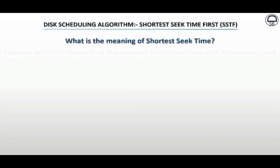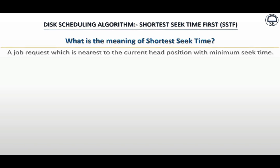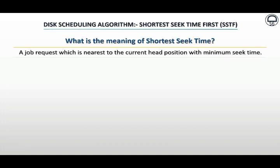Now let us discuss about the meaning of shortest seek time. It means a job request which is nearest to the current head position with minimum seek time. This algorithm helps to determine which job is nearest to the current head position with minimum seek time, and then services that job next. So this enables the job nearest to the disk arm to get executed first.